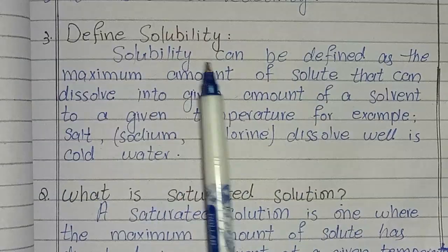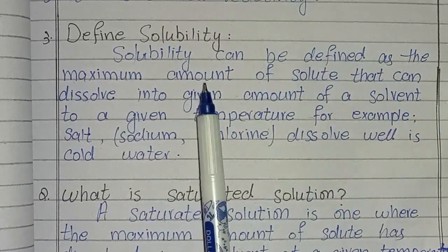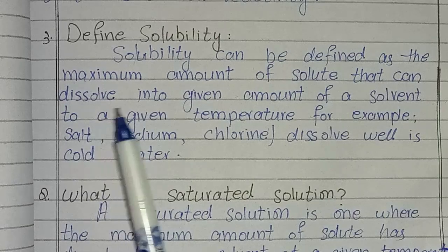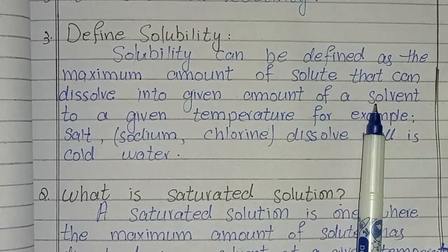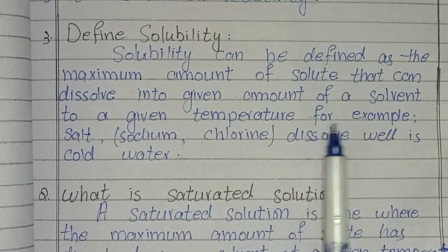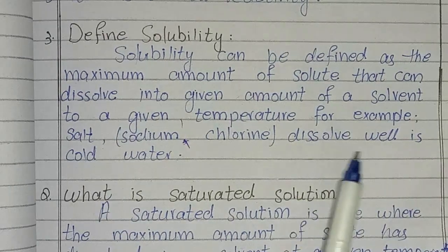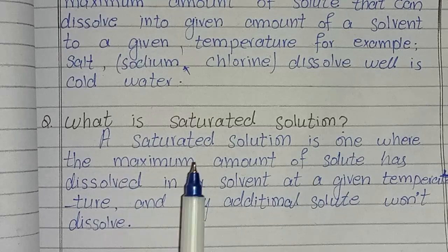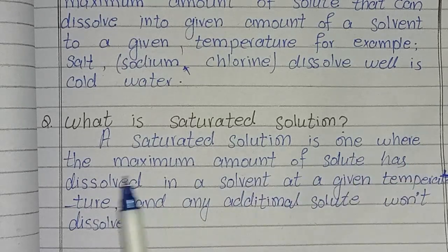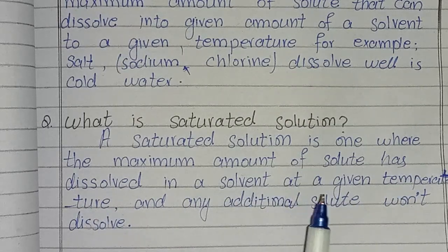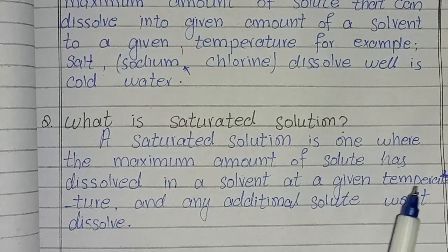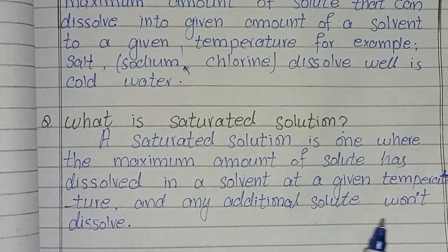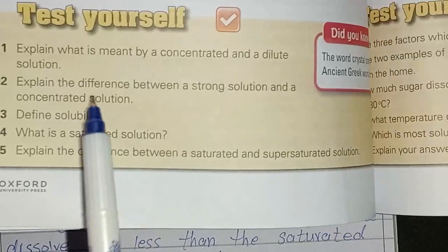A concentrated solution has a higher ratio of solute to solvent. It is weaker and has a low reactivity. Next question: define solubility. Solubility can be defined as the maximum amount of solute that can dissolve in a given amount of solvent at a given temperature. For example, salt dissolves well in cold water. What is a saturated solution? A saturated solution is one where the maximum amount of solute has dissolved in a solvent at a given temperature, and any additional solute won't dissolve.